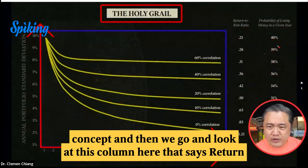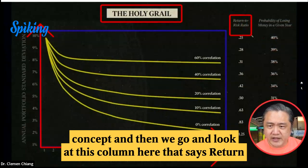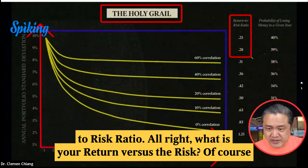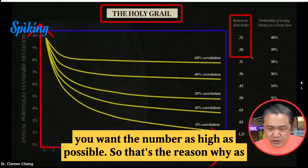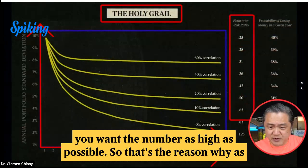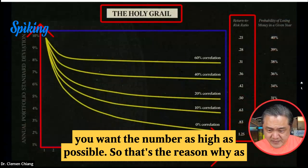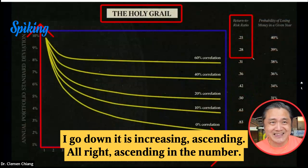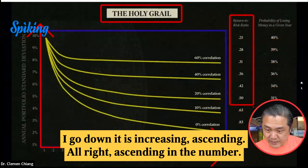Then we go and look at this column here that says return to risk ratio. What is your return versus the risk? Of course, you want the number as high as possible. So that's the reason why as I go down, it is increasing — ascending in the number.